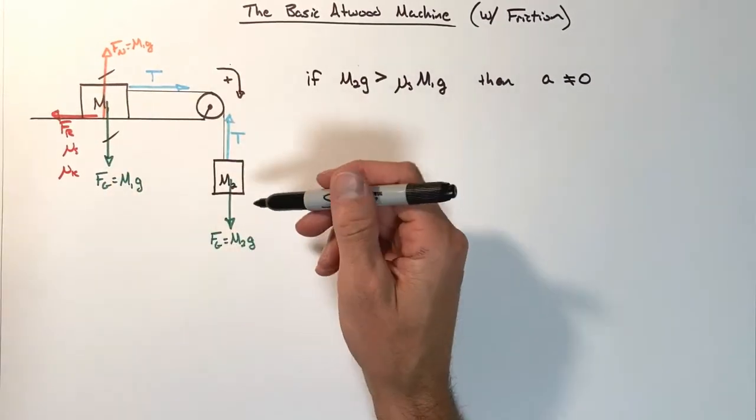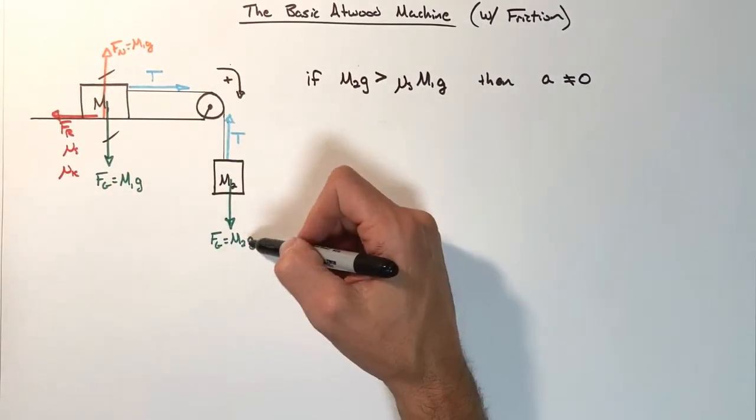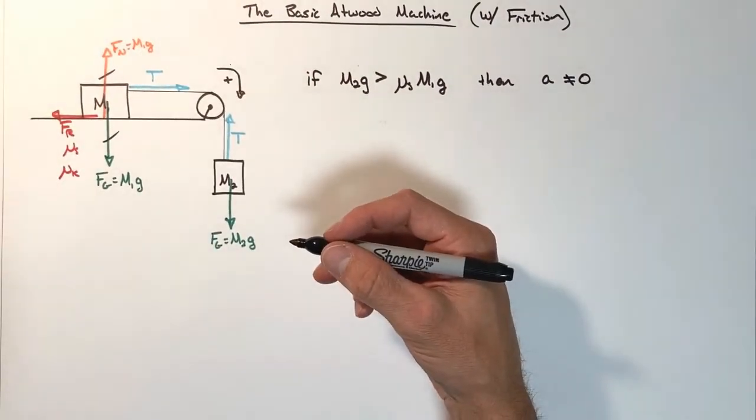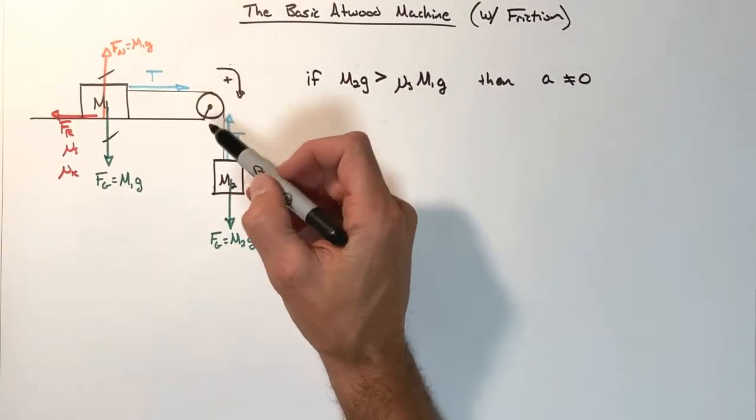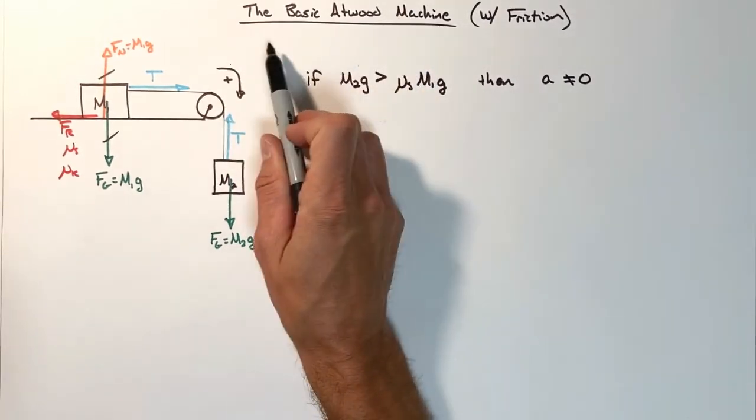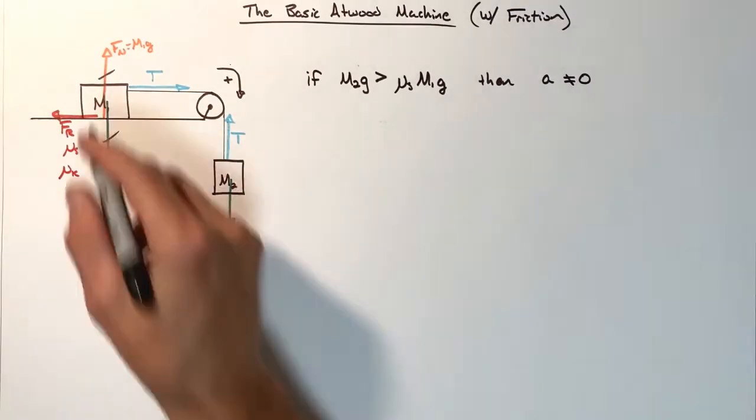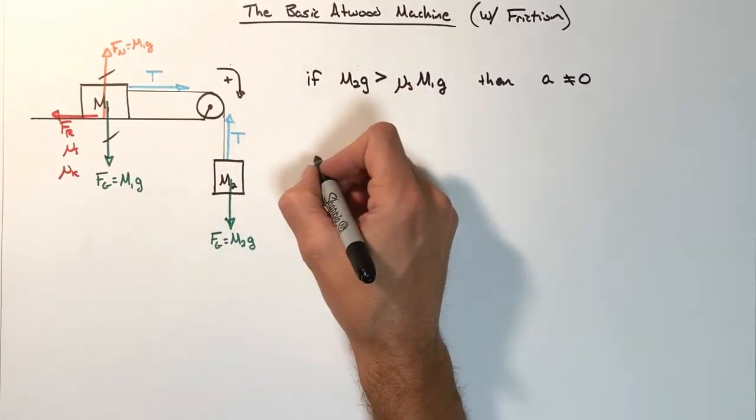So, what we're going to do now is look at what happens if M2G is, in fact, greater than mu S. In order to do this, we're going to solve this problem almost exactly like we did the basic Atwood machine without friction, and that is we're going to look at each block individually. So let's start with this block up here, M1.